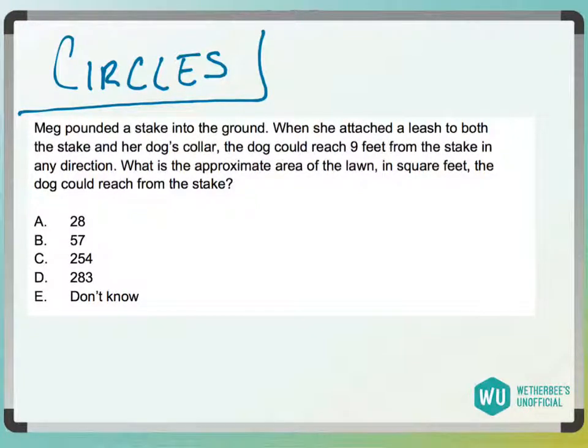All right, so we have Meg pounding a stake into the ground. Let's make the stake right here. She attaches a leash to the stake and her dog's collar. So the stake, and then here's the leash. Let's say this is her dog in her dog's collar.